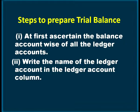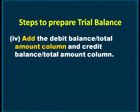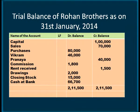Steps to prepare a trial balance: First, ascertain the balance account-wise of all ledger accounts. Write the name of the ledger account in the account column, and write against it the balance amount — debit balance in the debit column and credit balance in the credit column. For example, capital has a credit balance so written in the credit column; sales — credit balance; purchases and stock (assets) — debit balance. After adding both columns, the debit and credit balances both came to 2,11,500, which shows this is correct.